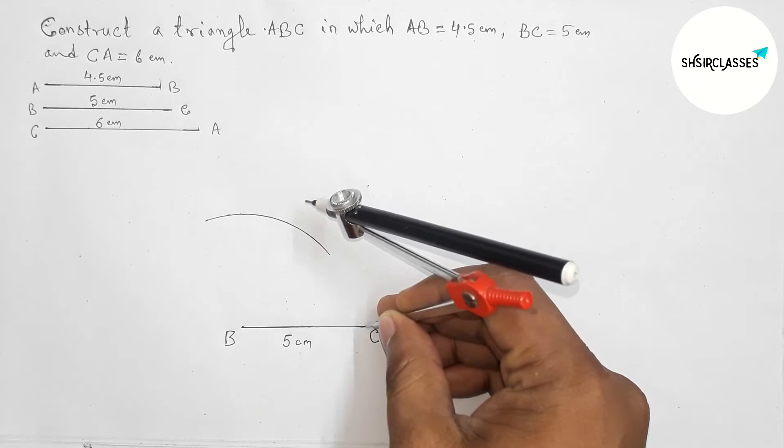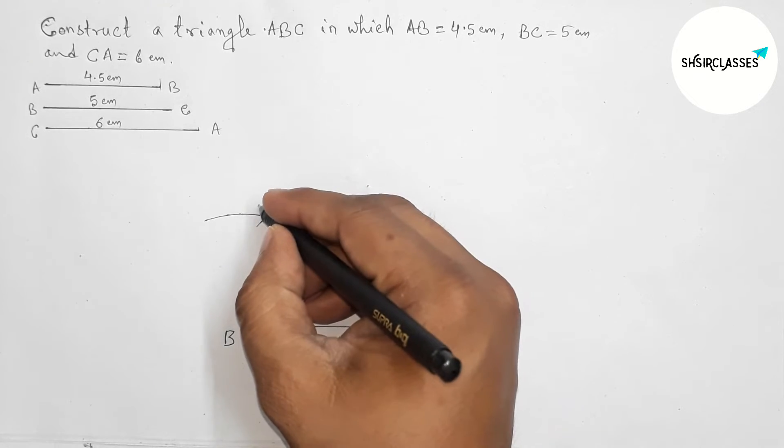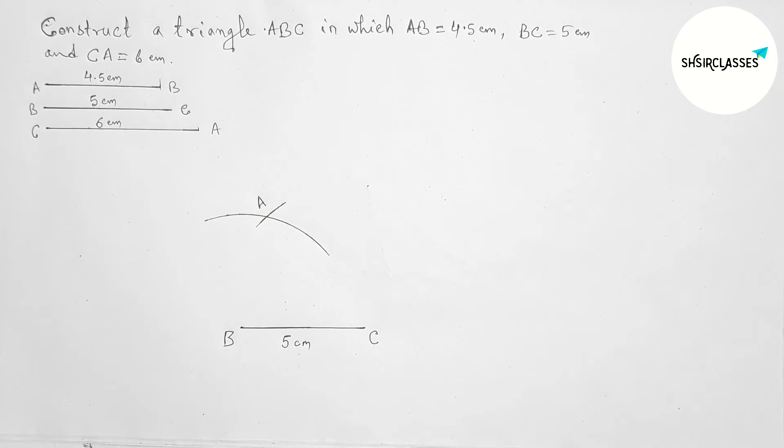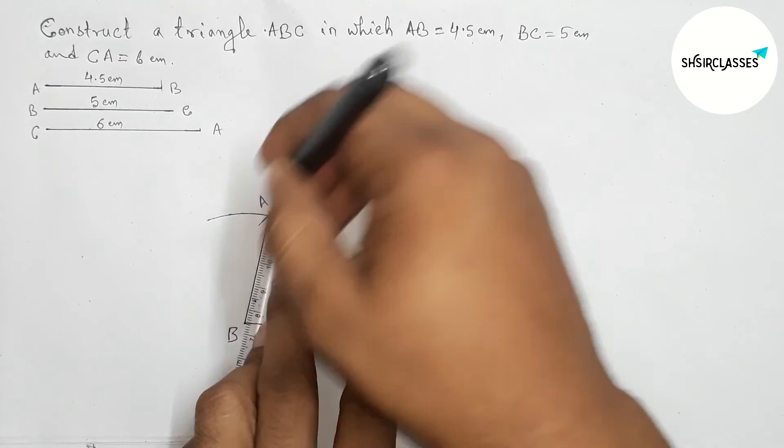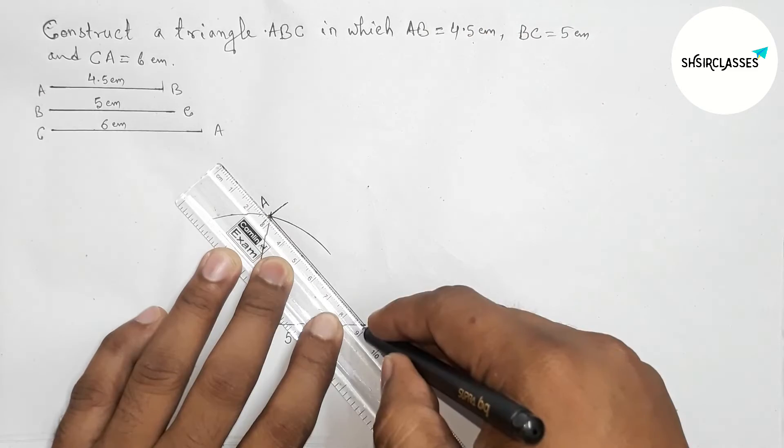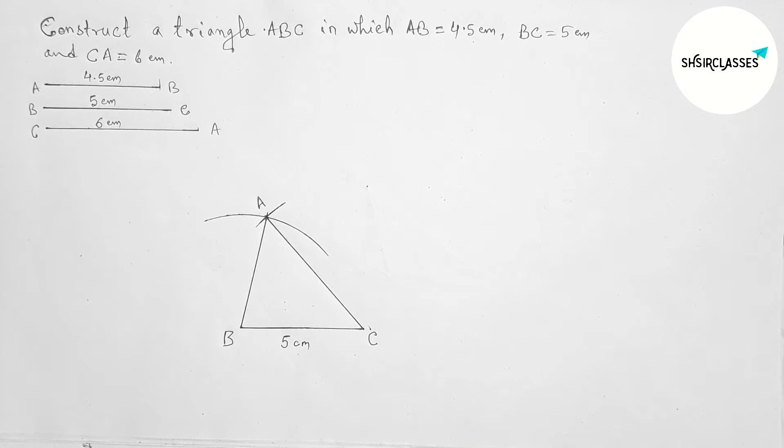Now putting the compass on the point C and cut the arc. Okay, so here both arcs meet at a point. Taking point A, so joining A and B, then joining A and C to complete the triangle ABC.